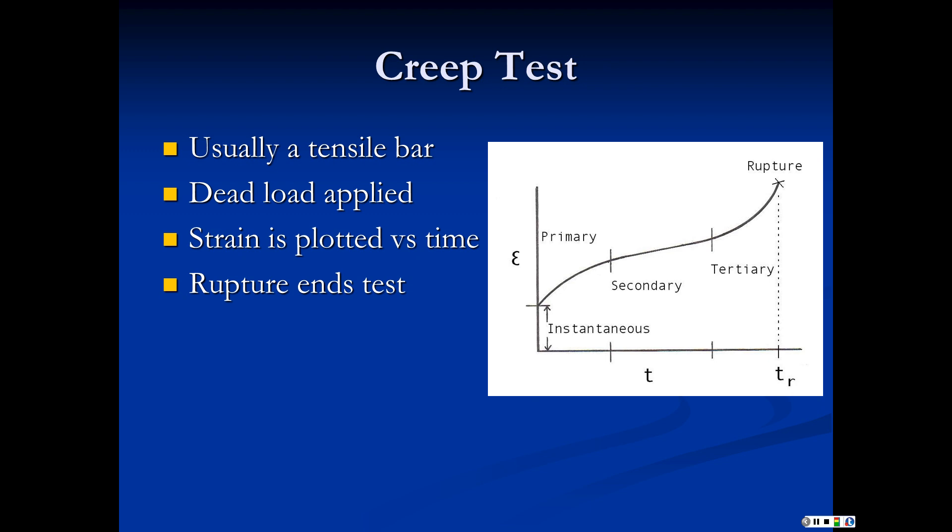A classic creep test uses a tensile bar. You apply a dead load, strain is plotted versus time, and it ruptures at the end. You have instantaneous strain, primary strain, secondary strain, and tertiary strain. In this secondary region, just like we did with fatigue, we can take the logs, find the slope, get the equation of a line, and get a growth law. What is my velocity of strain as a function of time? If we do this at several different stress levels, we can get a law that tells me the velocity of the strain as a function of stress.